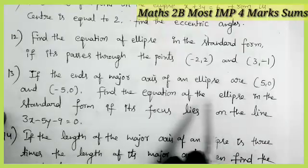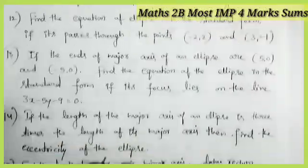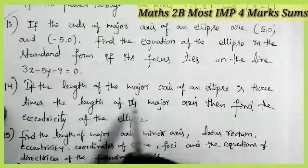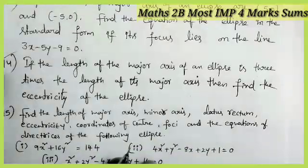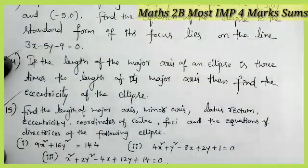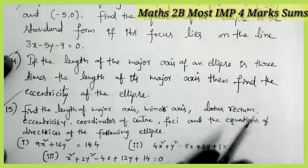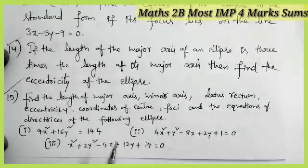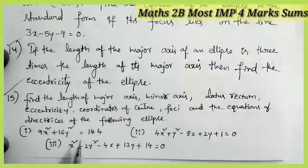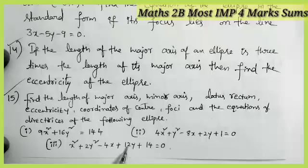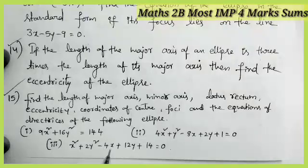If the ends of the major axis of an ellipse are (5, 0) and (-5, 0), find the equation of the ellipse whose focus lies on the line 3x minus 5y minus 9 equals 0. If the length of the major axis is 3 times the length of the minor axis, find the eccentricity — most important model. Find the length of the major axis, minor axis, latus rectum, coordinates of center, foci, equations of directrices, and eccentricity for the given ellipses — very very important model. The same type of question will be in the hyperbola also, so definitely solve this for both ellipse and hyperbola.